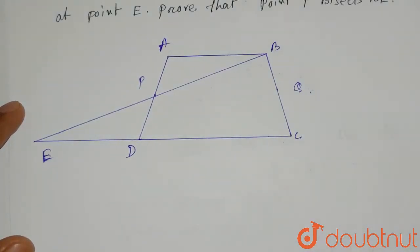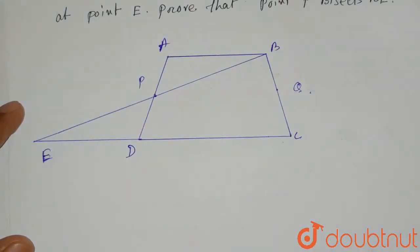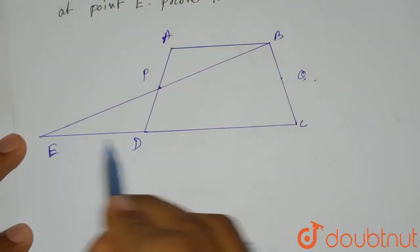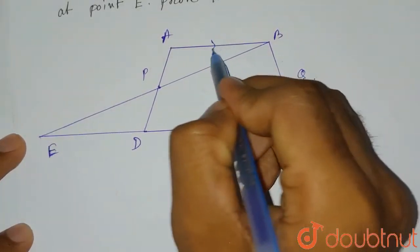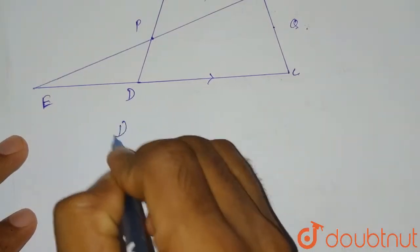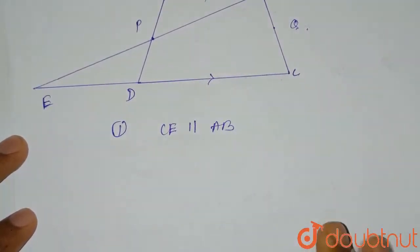So they are meeting at this point E. Now what we have to prove? We have to prove that P bisects BE. That means this point is the midpoint of the line BE. If you look at the diagram here, you can see that CD is produced up to E. That means CE will be parallel to AB as AB is parallel to DC. So from here you can see that first thing will be CE parallel to AB.